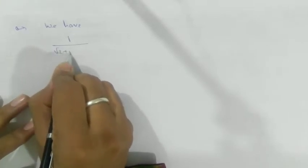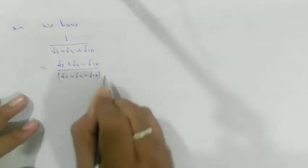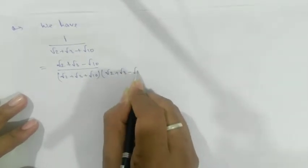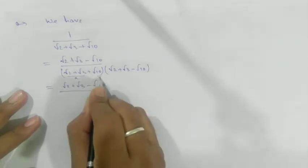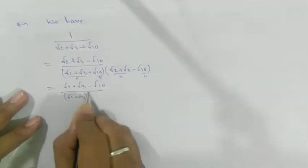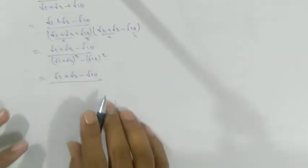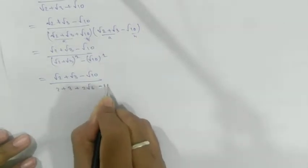We have 1 / (√2 + √3 + √10). Multiply numerator and denominator by the conjugate: the denominator becomes (√2 + √3 + √10)(√2 + √3 - √10), which by (a+b)(a-b) = a² - b² gives: (√2 + √3)² - (√10)² = 2 + 3 + 2√6 - 10.